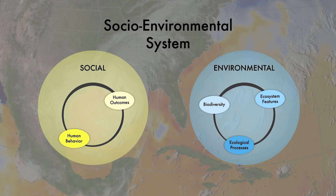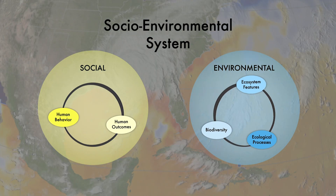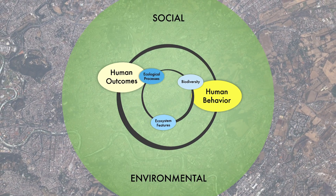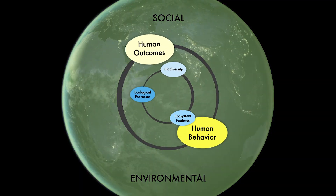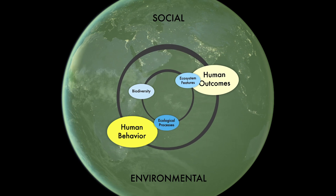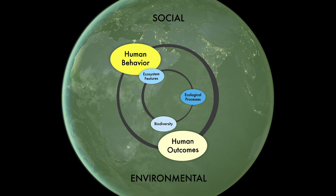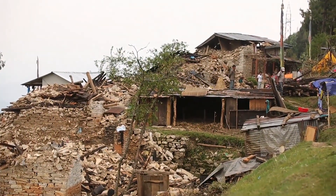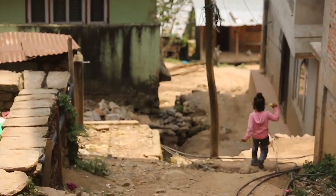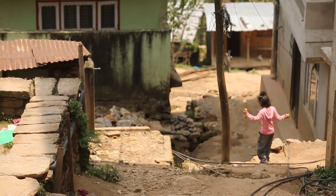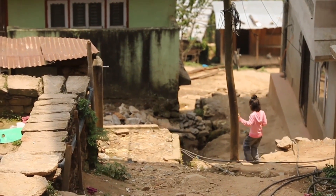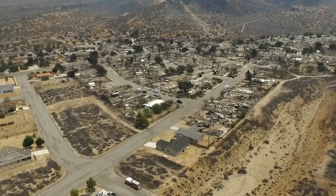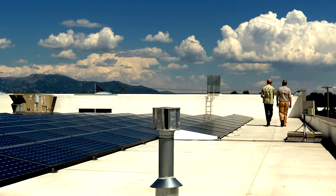Socio-environmental research focuses on balancing the needs of people and the environment. Interactions such as these influence the long-term sustainability of nature, which in turn influences the quality of our lives. There are many environmental problems and solving them is not easy. It requires interdisciplinary teams because knowledge from the social and natural sciences must be integrated.